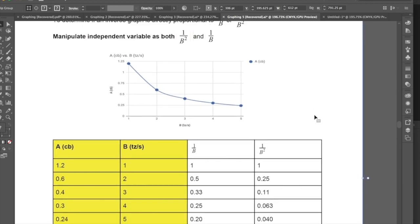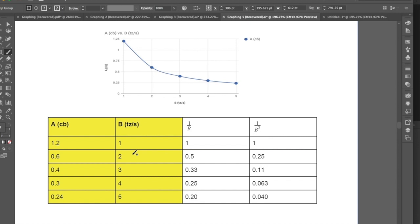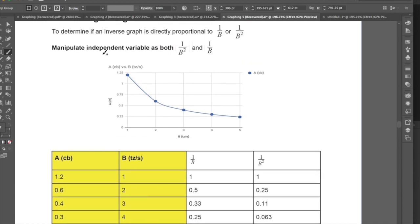So if we have this graph right here, and this graph, as you can see, is a, dependent a versus b. So here's the data a versus b here. So in order to determine whether it is directly proportional 1 over b or 1 over b squared, we want to manipulate the independent variable b, so we get the values 1 over b and 1 over b squared.